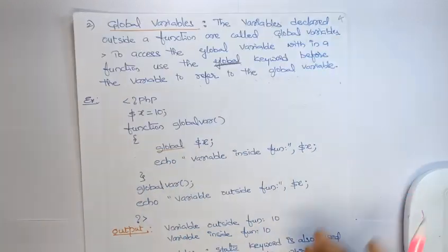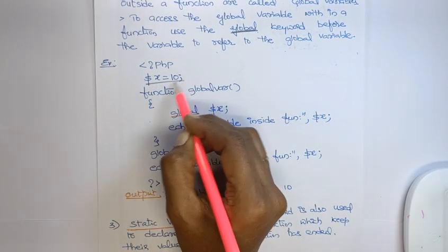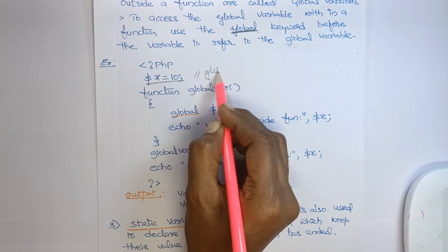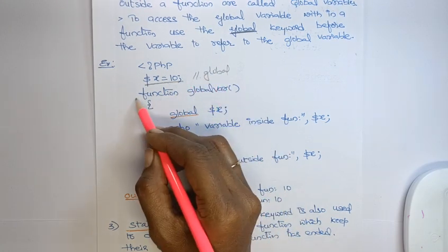So here, whenever you are defining any variable outside of the function, then you can say that is a global variable. This global variable, if you want to use within a function, then you need to use the global keyword before the variable name.